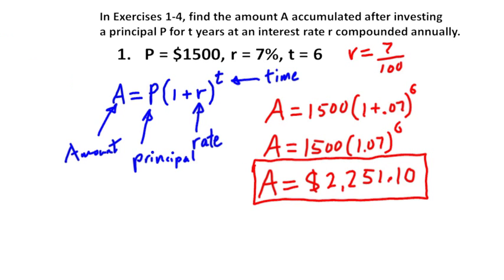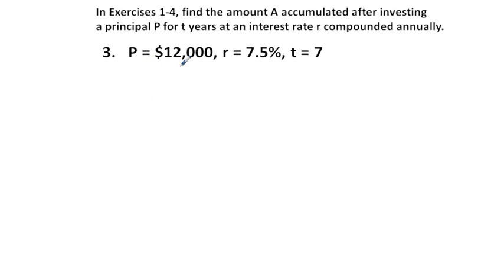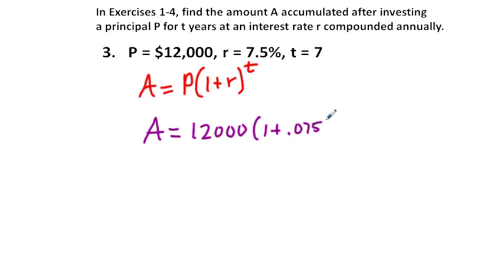Next, problem 3. Quite similar. We have our formula, amount equals principal times 1 plus R to the power of T. Here we're given the amount equals, our principal is $12,000. And we have 1 plus, this 7.5% is going to be 0.075 to the power of T, which is 7. Going ahead and adding the 1 to the rate, we get 1.075 to the power of 7.